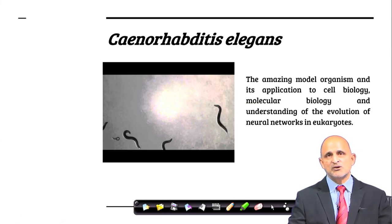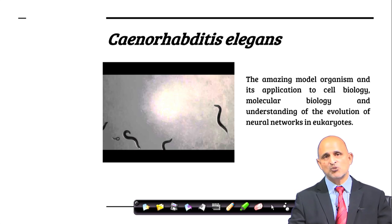C. elegans is one of the model organisms which will be covered in this course. For C. elegans, we will be covering the life cycle, the neurobiology, as well as the molecular biology. C. elegans is used as a model organism and it is famous through Sidney Brenner, who won a Nobel Prize for his work on the C. elegans genome.